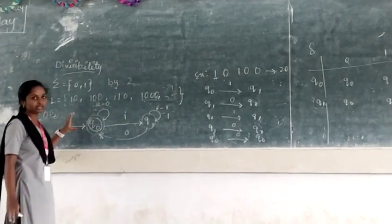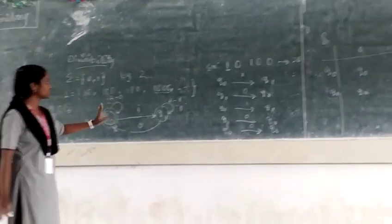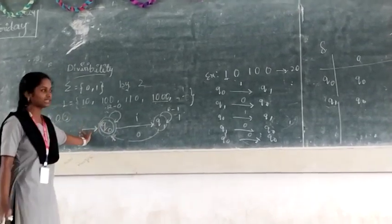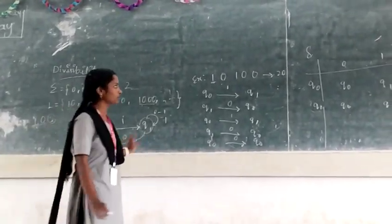And it will also accept by this DFA. So that's what is accepted by this DFA, means we have constructed the proper complete DFA for divisibility by two.